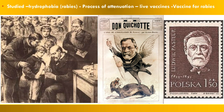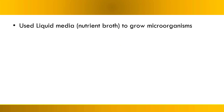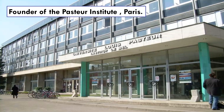Pasteur also studied rabies (hydrophobia), caused by a virus transmitted through dog bites. He studied the process of attenuation of the rabies virus and was the first to make a live rabies vaccine — making him a superhero in those days, as rabies was 100% fatal. Beyond rabies, he also developed vaccines for anthrax and fowl cholera. He discovered how to grow microorganisms using liquid medium, and based on his immense contributions, the Pasteur Institute was established in Paris, France.